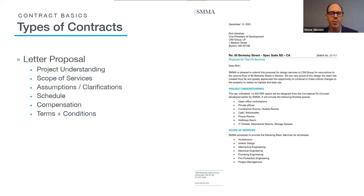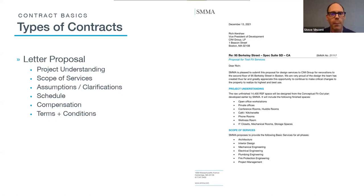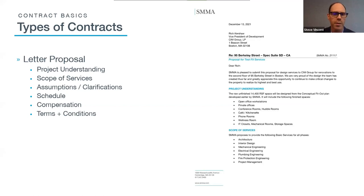Different types of contracts: a simple letter proposal outlines the project understanding, the scope of services — what you're doing in each phase like schematic design and CA — any assumptions or clarifications (for example, we're locating card reader back boxes and conduit on plans but not designing the security system), the schedule, your compensation — either fixed fee or time and materials — and lastly attaching your terms and conditions, which is very important.